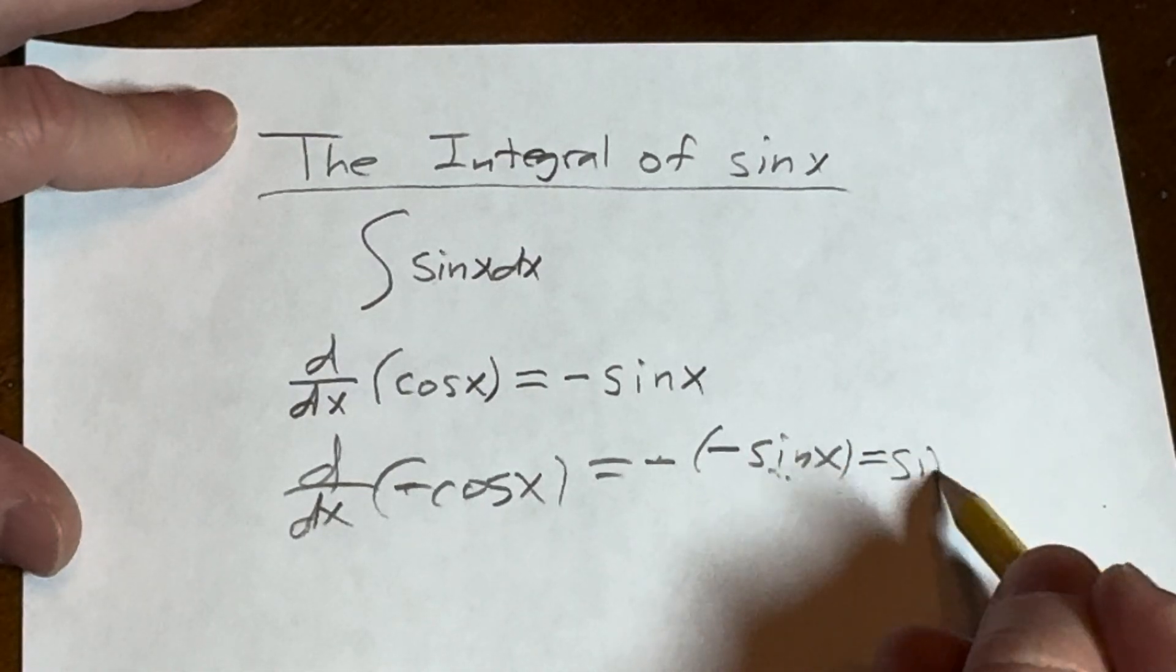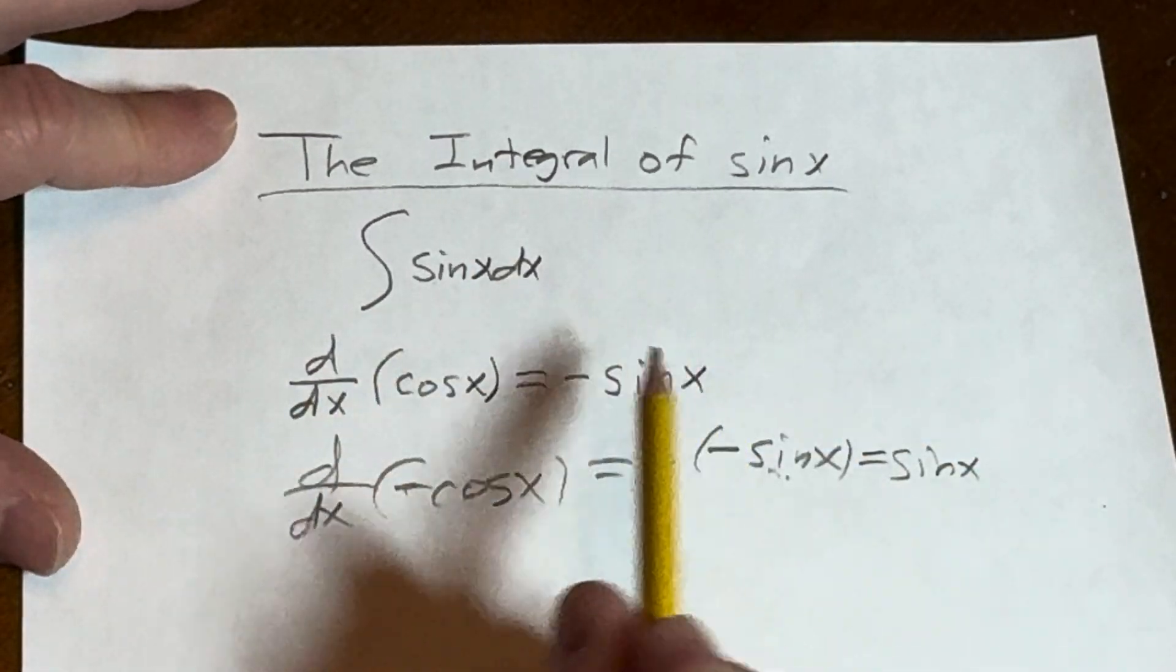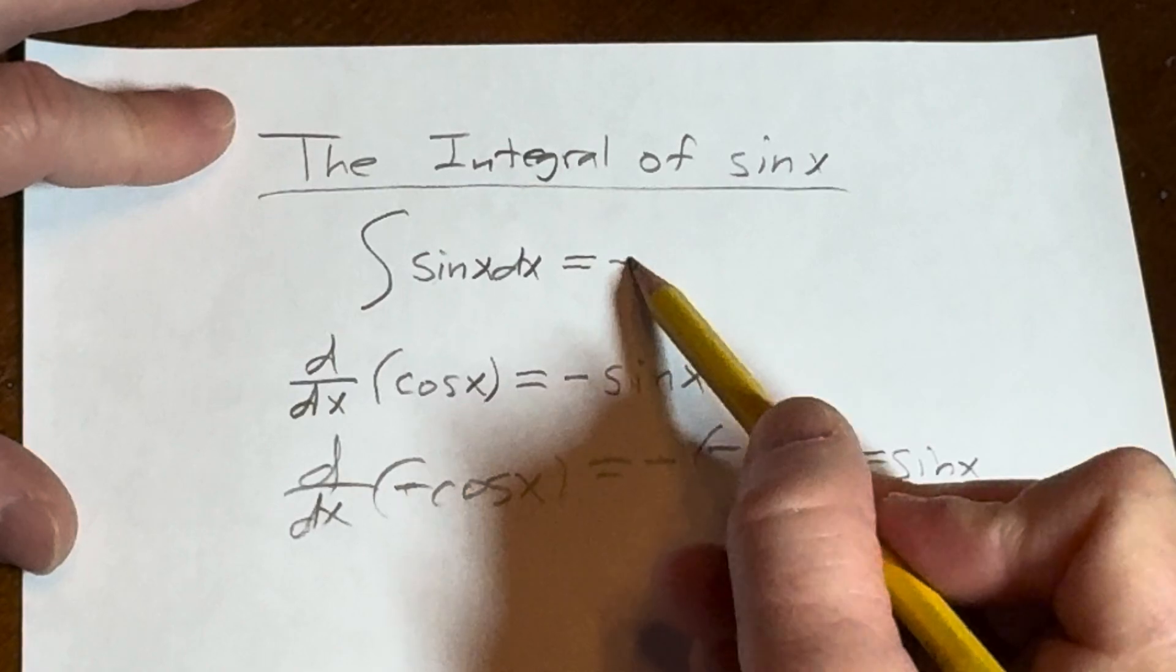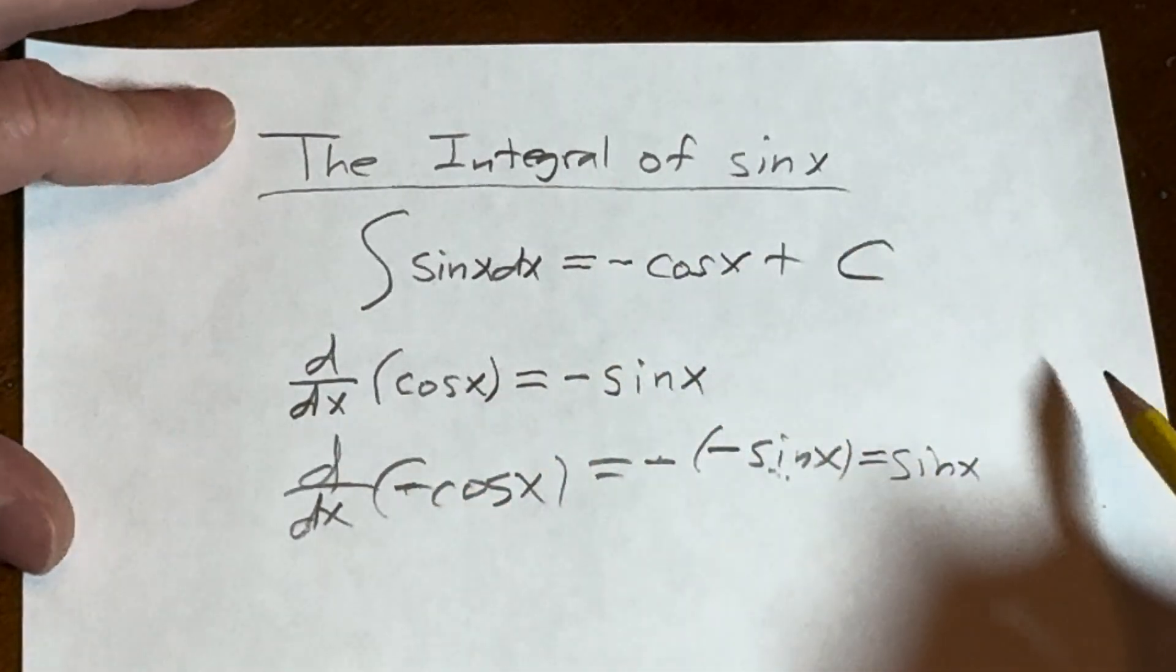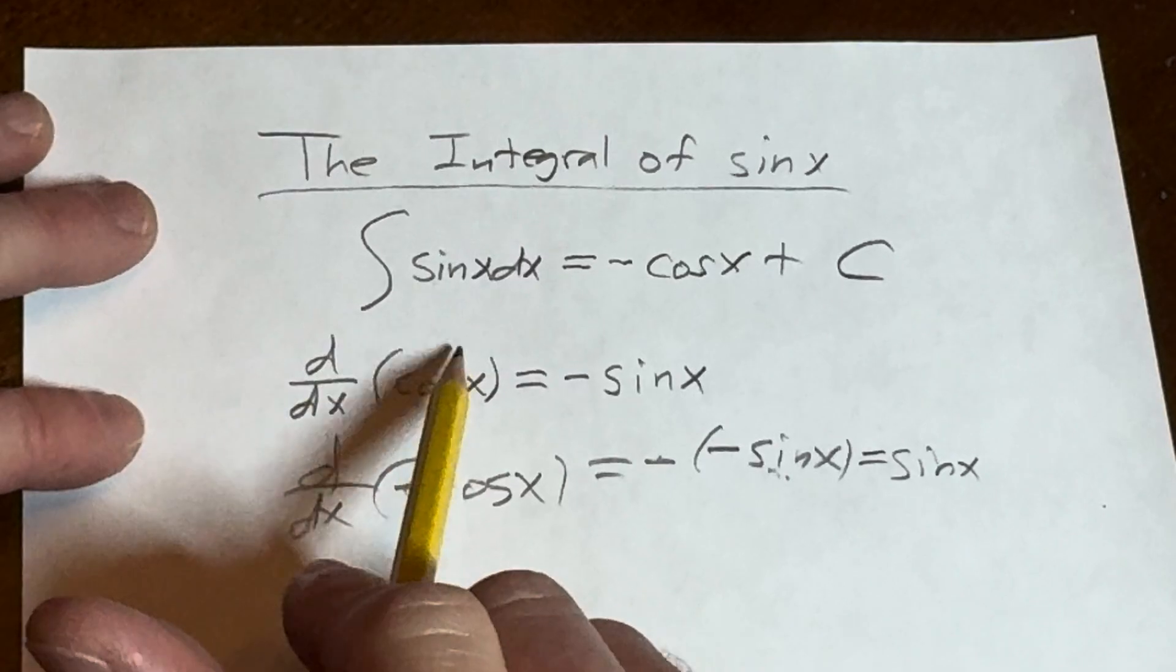Well, negative and negative is positive. That's what we want, right? So this is equal to negative cosine x plus our constant of integration, capital C. So when you look at